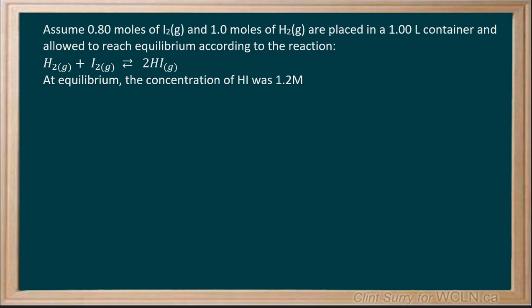Hydrogen gas plus iodine gas makes hydrogen iodide gas. We're told that at equilibrium the concentration of hydrogen iodide was 1.2 molar.